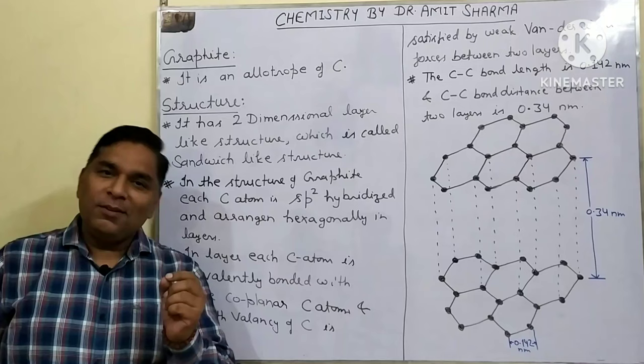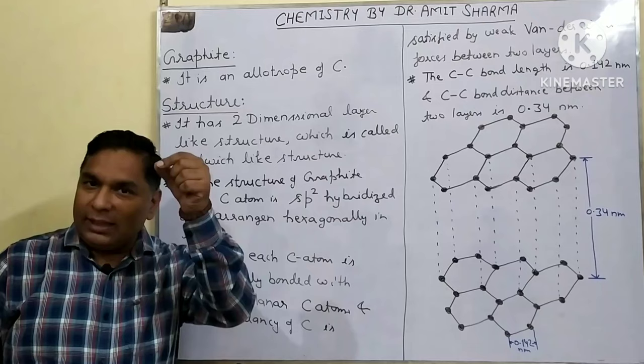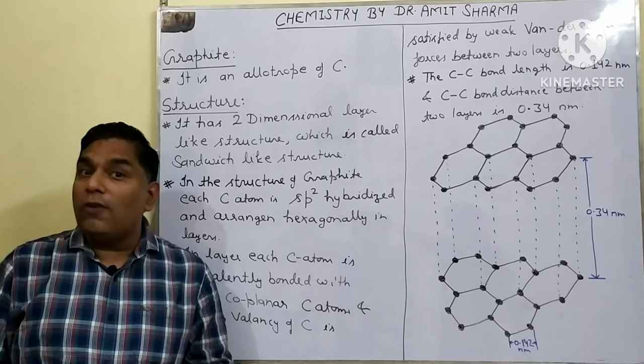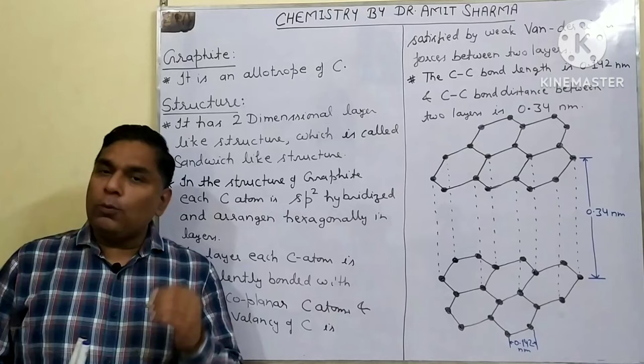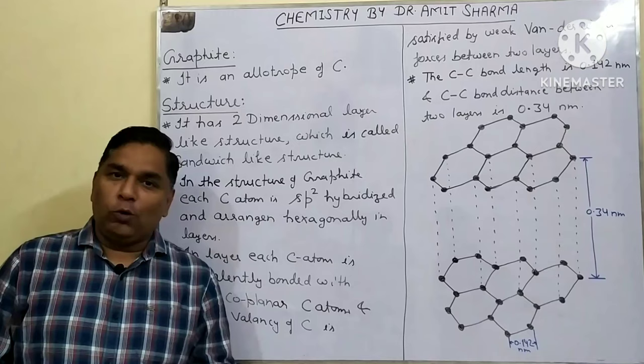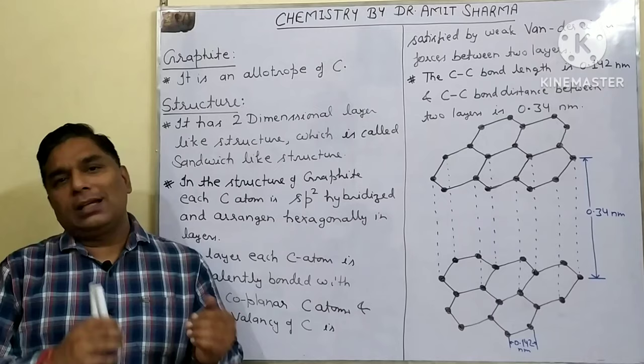Graphite is what you see as the lead inside a pencil. Also, in dry cell batteries like the Leclanché cell, there is a black colored electrode made of graphite. When an element exists in nature in more than one structure, those structures are called allotropes, and this phenomenon is called allotropism.